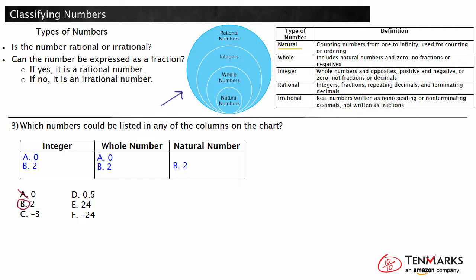Choice C has a negative sign, so we know it cannot be a natural number. Neither whole numbers nor natural numbers include negative numbers. Cross out choice C since the number is negative. Choice D is 0.5, written in decimal form. This number is not a whole number or natural number because it is a fraction of a number. Cross out choice D. Choices E and F are both the number 24, while choice F is negative. Choice E is a natural number, which is then a whole number and integer because it is a counting number. Negative 24 is not a natural number or a whole number since it is negative. Circle choice E and cross out choice F.